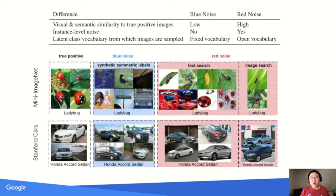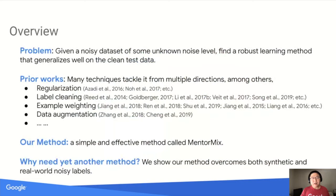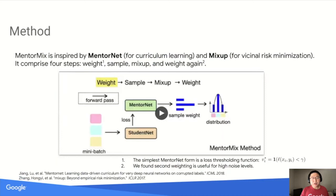Let's move on to our second contribution, which is a new method. Given a noisy dataset of some unknown noise level, we want to train a better model that can generalize well on a clean test set. In this work, we propose a simple yet highly effective method called MinterMix, and we show that our method can overcome both synthetic and real-world noise labels. MinterMix is inspired by two existing works: Minternet for curriculum learning, and Mixup for empirical risk minimization. At a high level, it computes a weight, samples, mixes up, and re-weights.